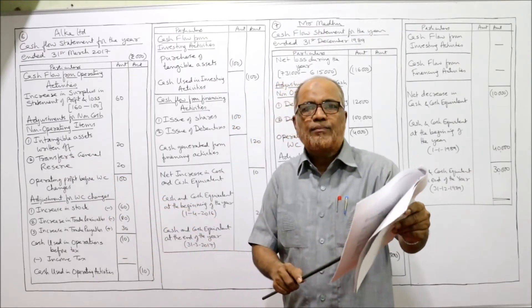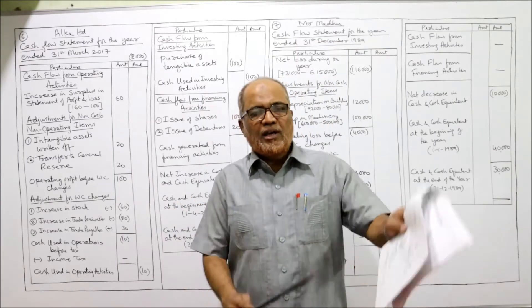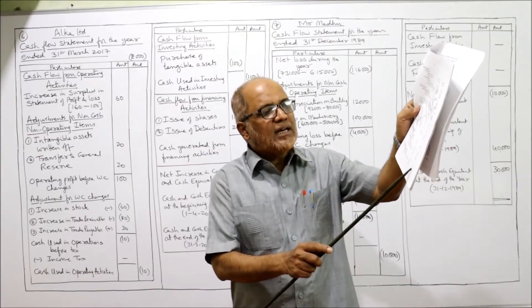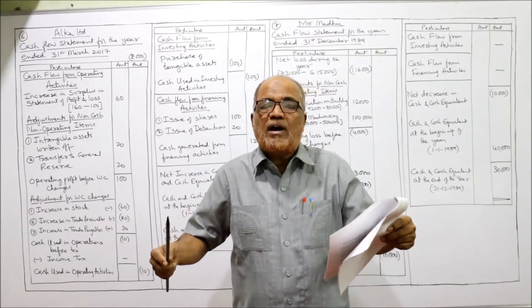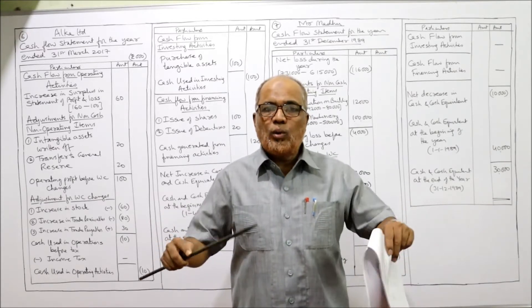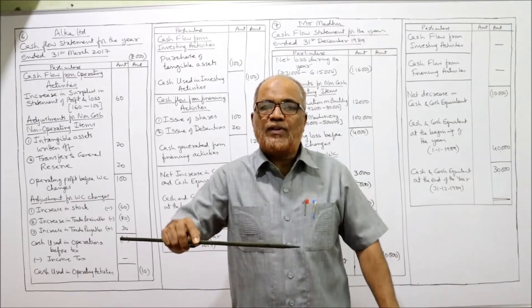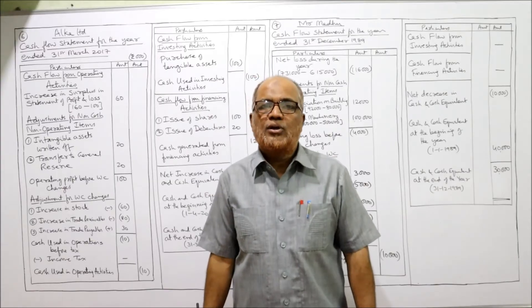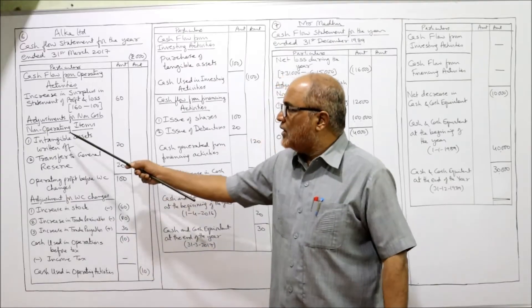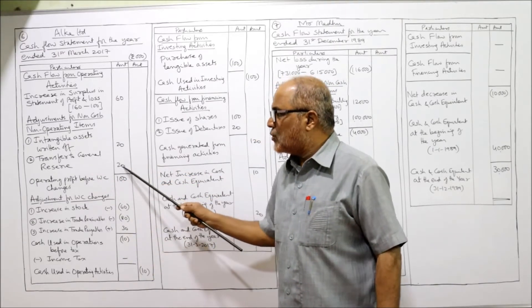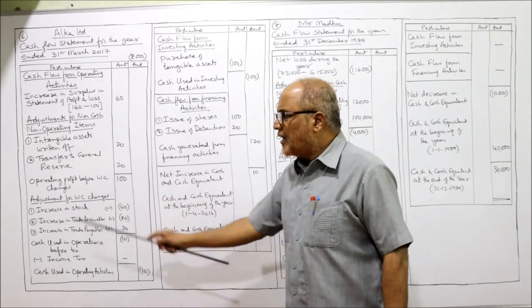When intangible assets are written off, it is a non-cash item. Intangible assets written off: 20 (the difference between last year and current year). Similarly, general reserve: last year 60, current year 80 — it has increased, so we make the assumption that profit was transferred from profit and loss to general reserve. Transfer to general reserve is a non-cash item, so we add 20.